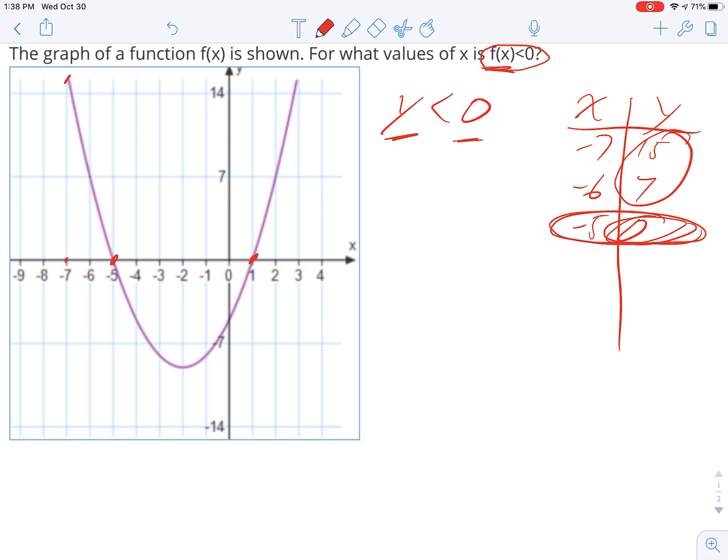is where the y values went from being positive, to now if I go to, let's say, negative 4, I can't quite tell what that is. Maybe it's around negative 5. Now I'm getting negative y values.